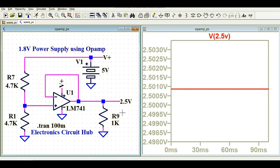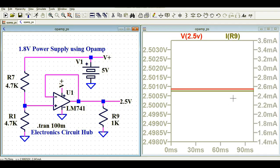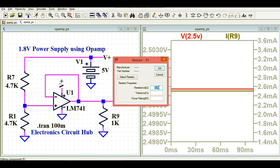Since I connected the load here as 1K, the current might be 2.5 milliampere or so. If you look at IR9, the current flowing through the load resistance R9 is 2.5 milliampere. If you want to get 1.8 volt output with the same input voltage, you can change the value of the resistor.